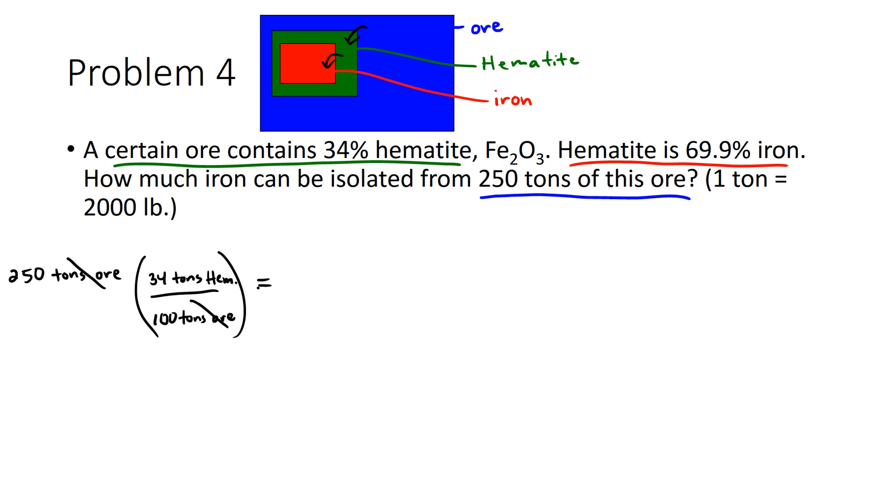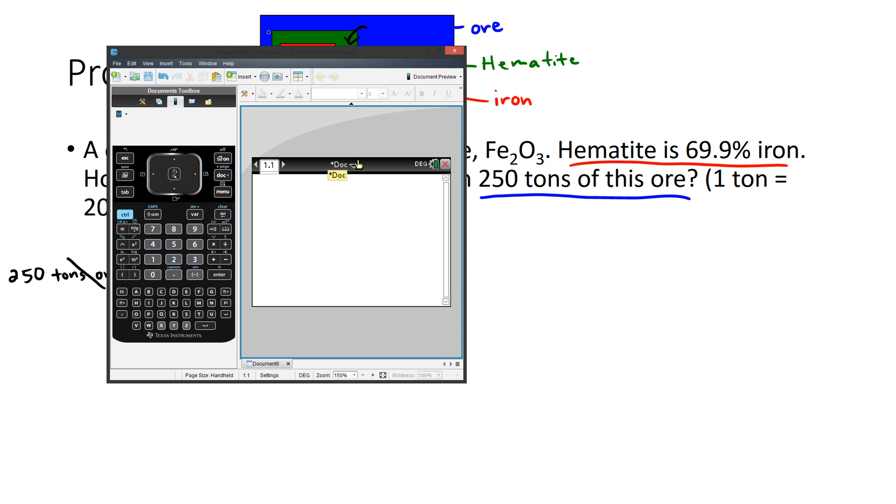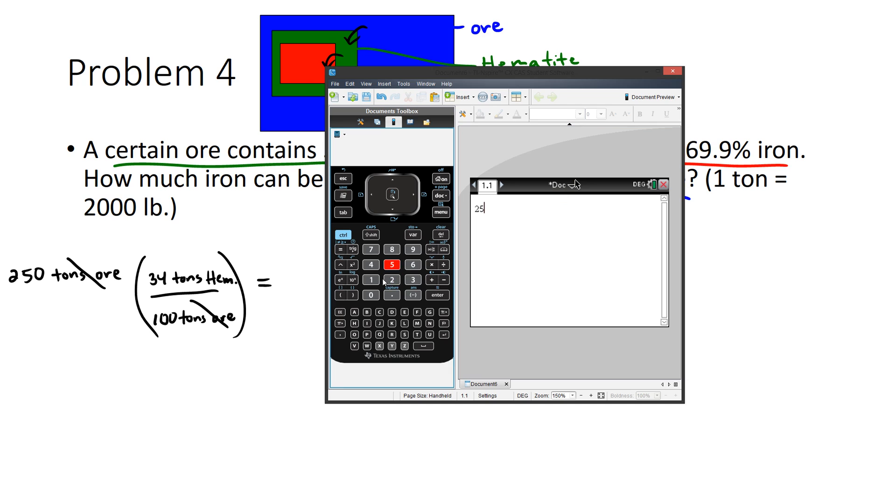So we have 250 times 34 divided by 100, which gives us 85 tons of hematite.